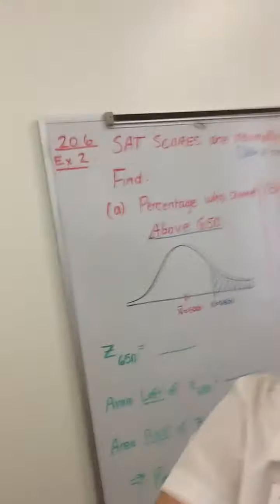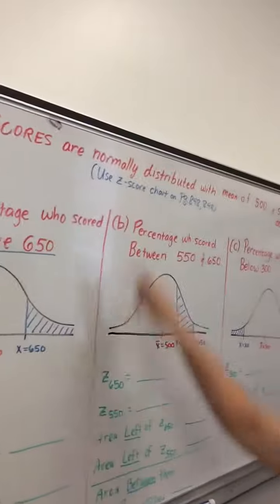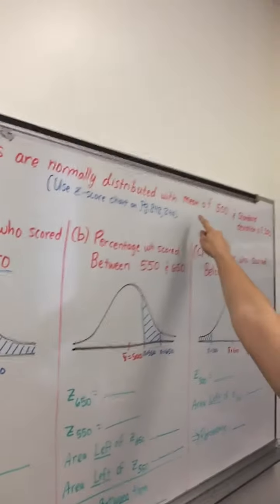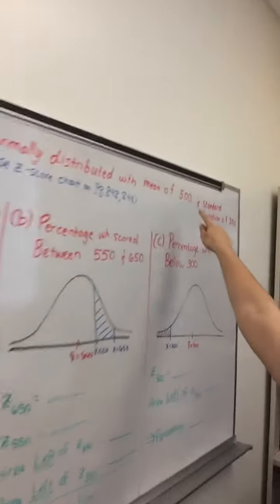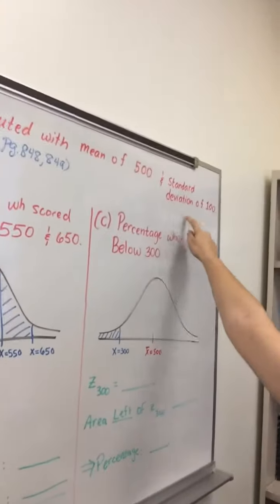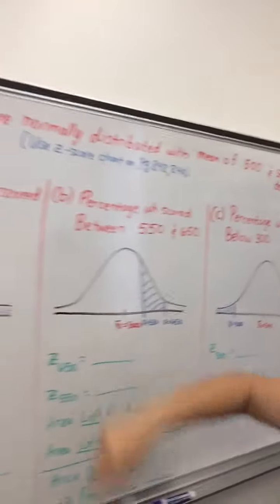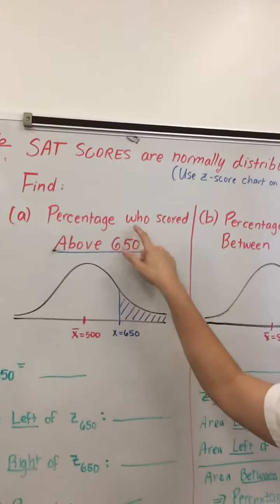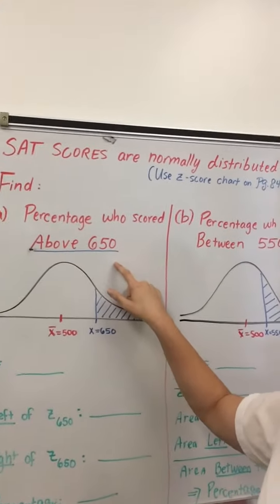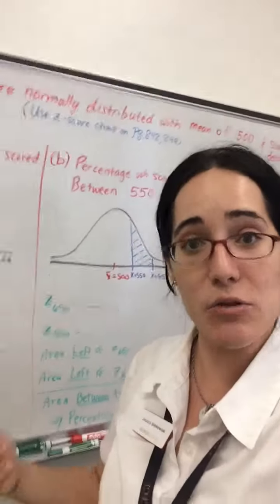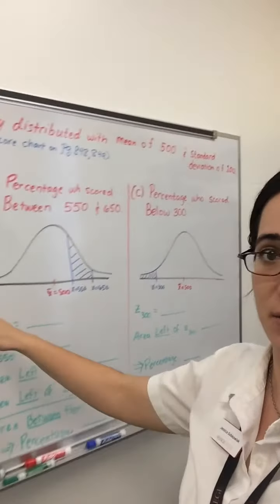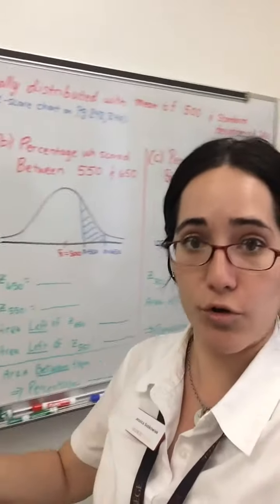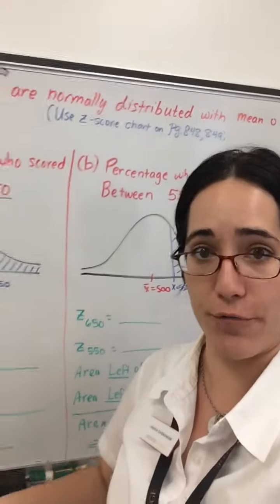It said SAT scores were normally distributed with a mean of 500 and a standard deviation of 100. Our instructions then are to find, in part A, the percentage of those who scored above a 650. So because it's normally distributed in each of these cases, there's three cases, we'll first begin by drawing a bell curve.